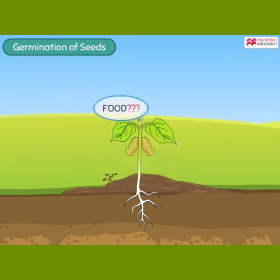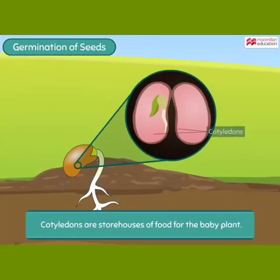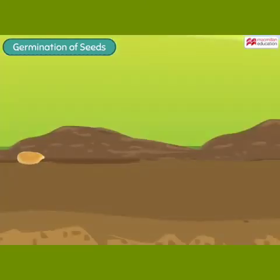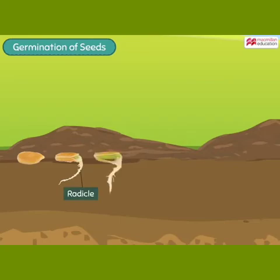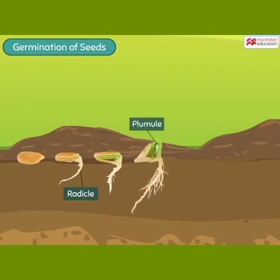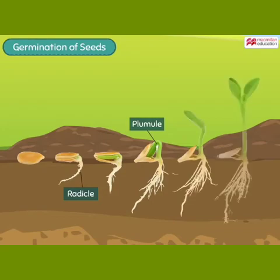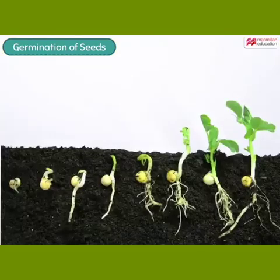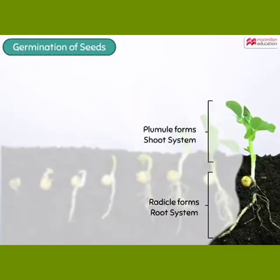You might wonder where this baby plant gets food to grow. Well, the cotyledons of the seed are actually storehouses of food for the baby plant. The baby plant starts to grow and the first part to emerge from it is called the radicle. It slowly starts growing in the downward direction. Next, the plumule emerges out from the embryo and starts growing in the upward direction. The radicle develops to form the root system of the plant, while the plumule gives rise to the shoot system bearing the leaves and branches of the plant.